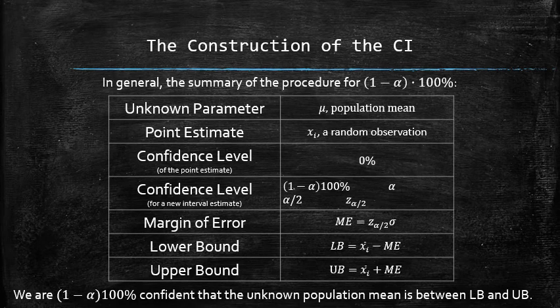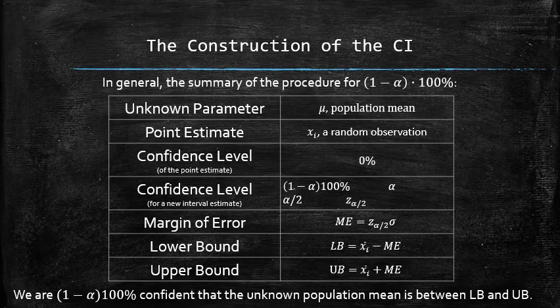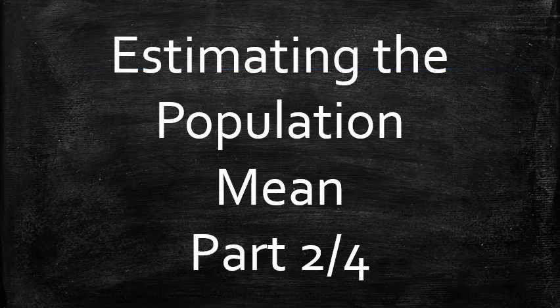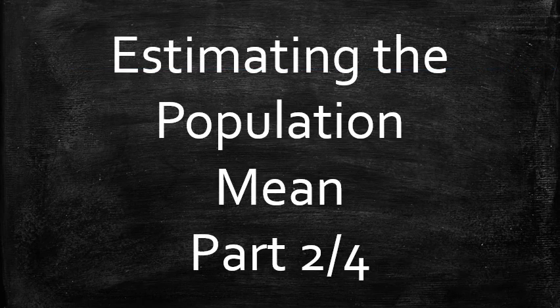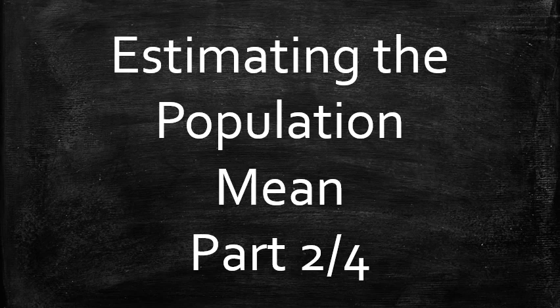Here you can see the summary of the procedure for constructing a confidence interval from a single random observation with any confidence level, along with its interpretation. So far we have developed a procedure to create with a positive confidence an interval estimate of the unknown population mean using a single random observation.